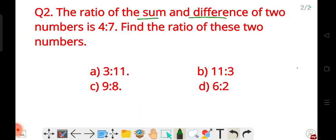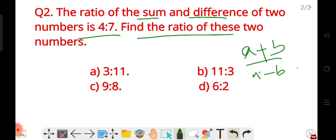Sum and difference ratio is given as 4 to 7. We need to find the two numbers' ratio. You need the answer. Same process. Use the A plus B, A minus B formula. You need the answer. Comment your answer.